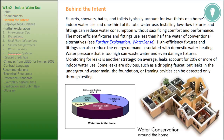Behind the intent: faucets, showers, baths, and toilets typically account for two-thirds of a home's indoor water use and one-third of its total water use. Installing low-flow fixtures and fittings can reduce water consumption without sacrificing comfort and performance. The most efficient fixtures and fittings use less than half the water of conventional alternatives. High-efficiency fixtures and fittings can also reduce the energy demand associated with domestic water heating. Water pressure that is too high can waste water and even damage fixtures. On average, leaks account for 20% or more of indoor water use; some leaks are obvious such as a dripping faucet, but leaks in the underground water main, foundation, or framing cavities can be detected only through testing.